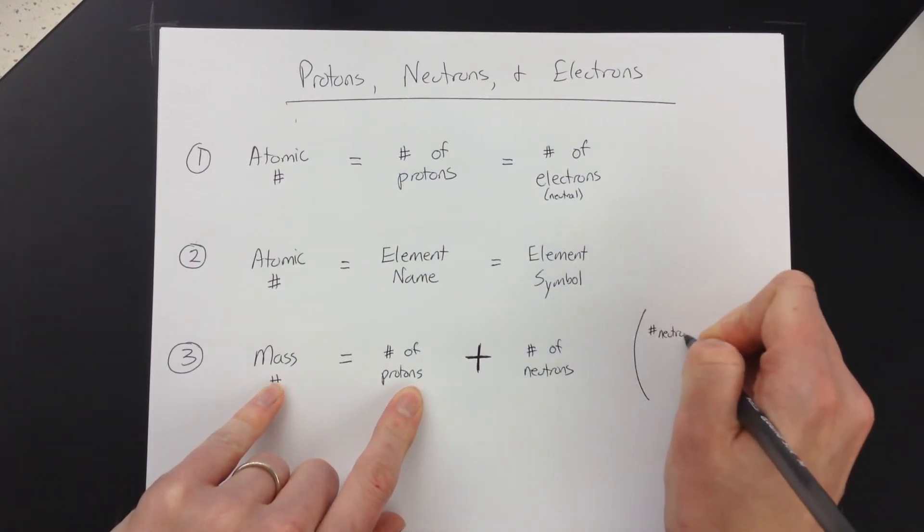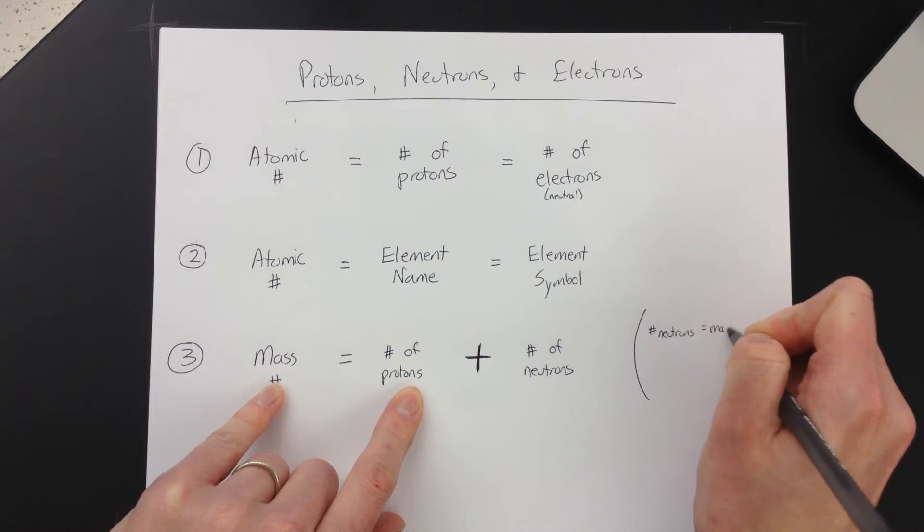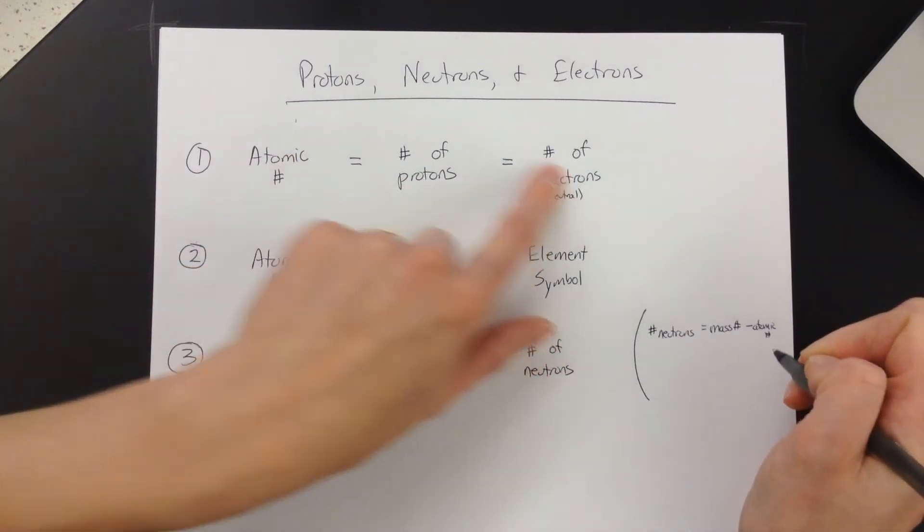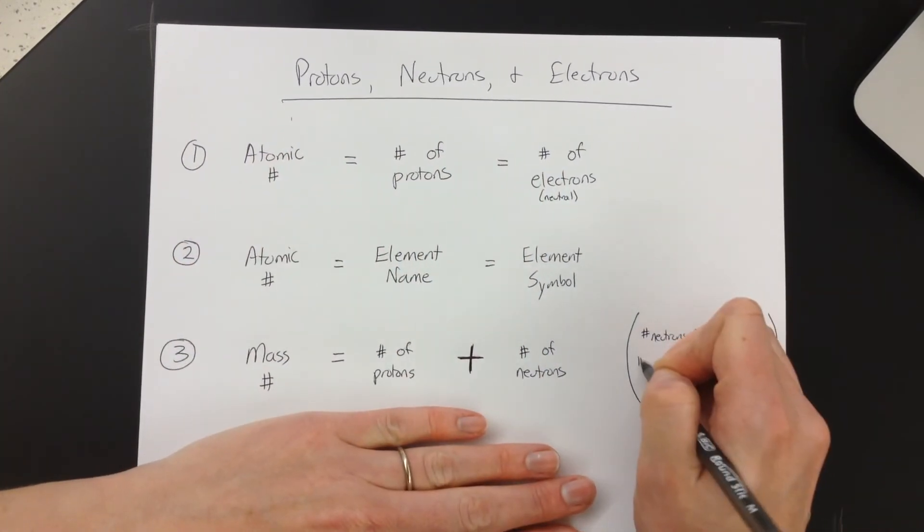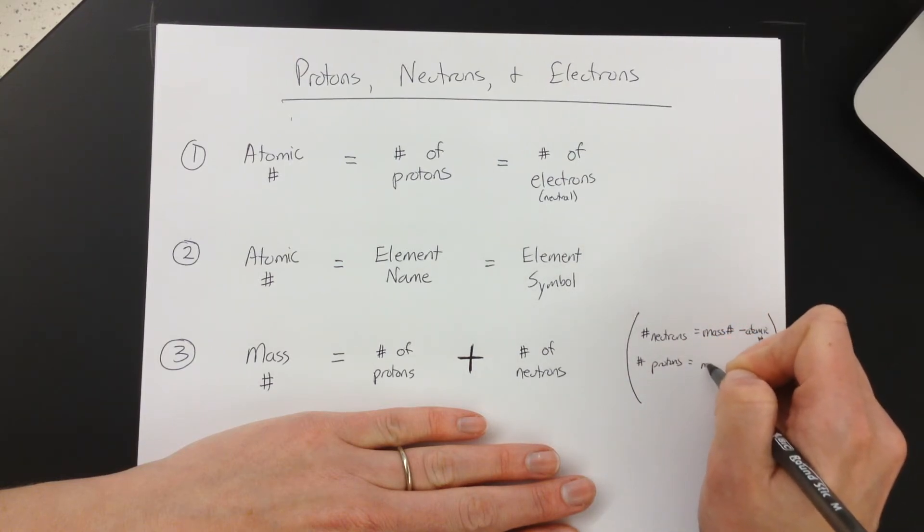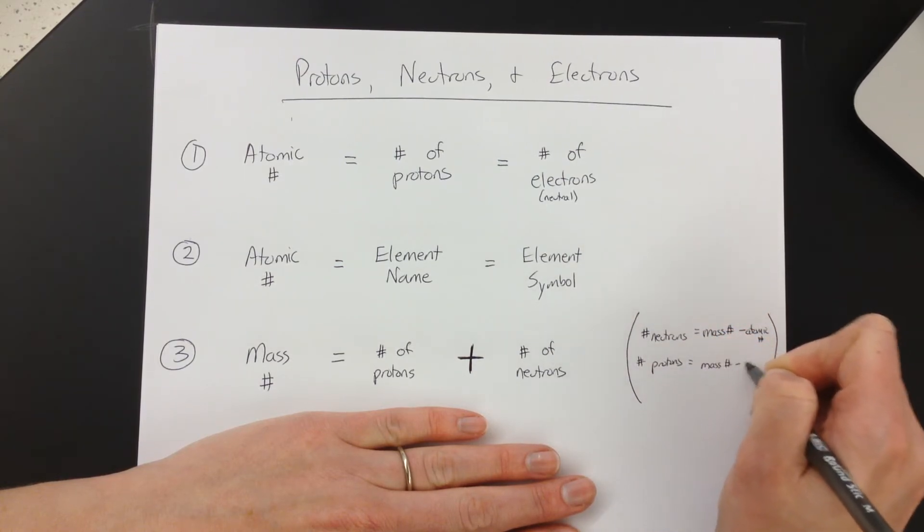the number of neutrons would be the mass number minus the atomic number, which again, if you know the protons or electrons, you know the atomic number. And the number of protons would be the mass number minus the number of neutrons.